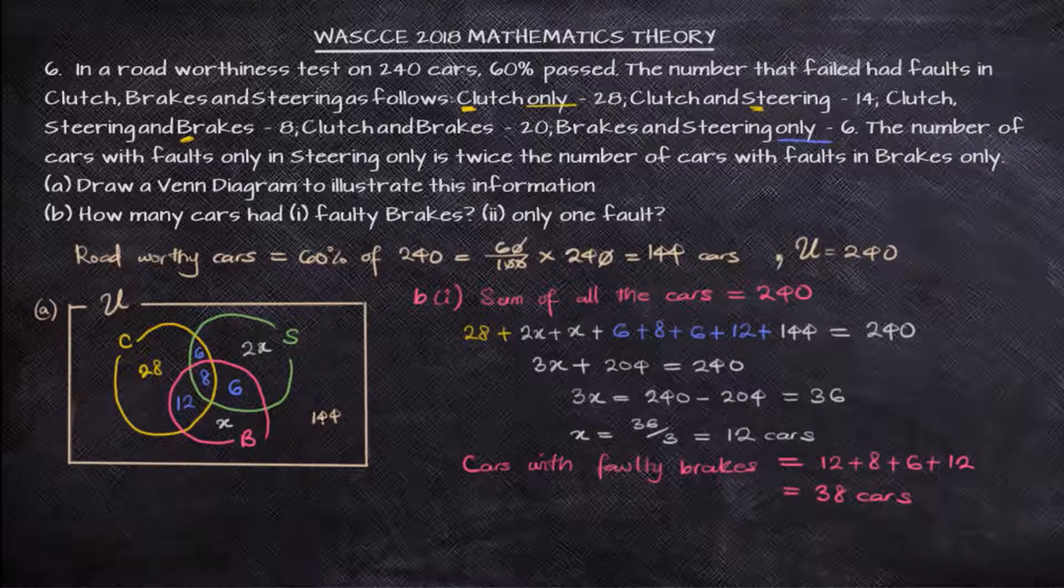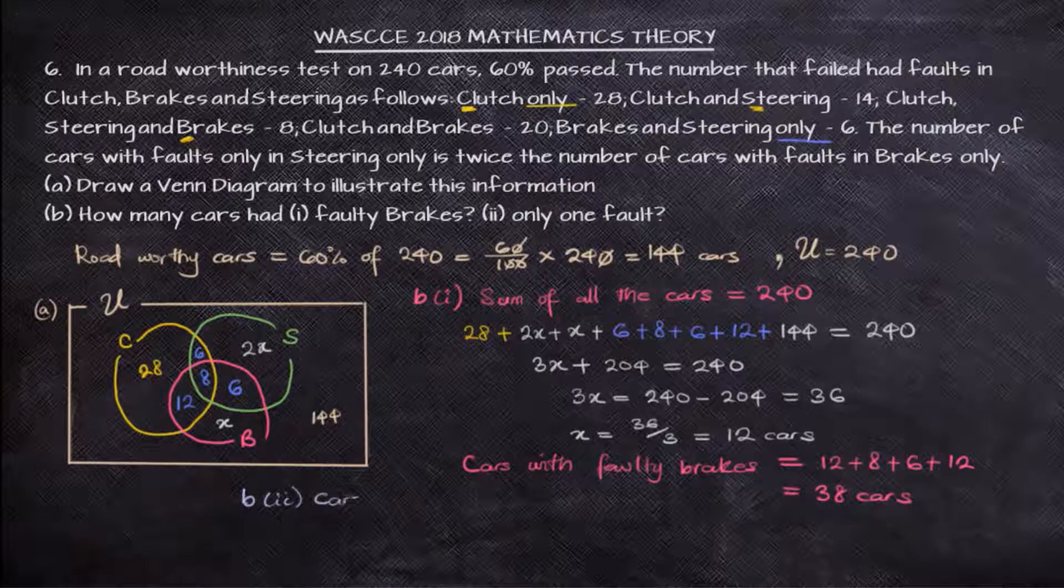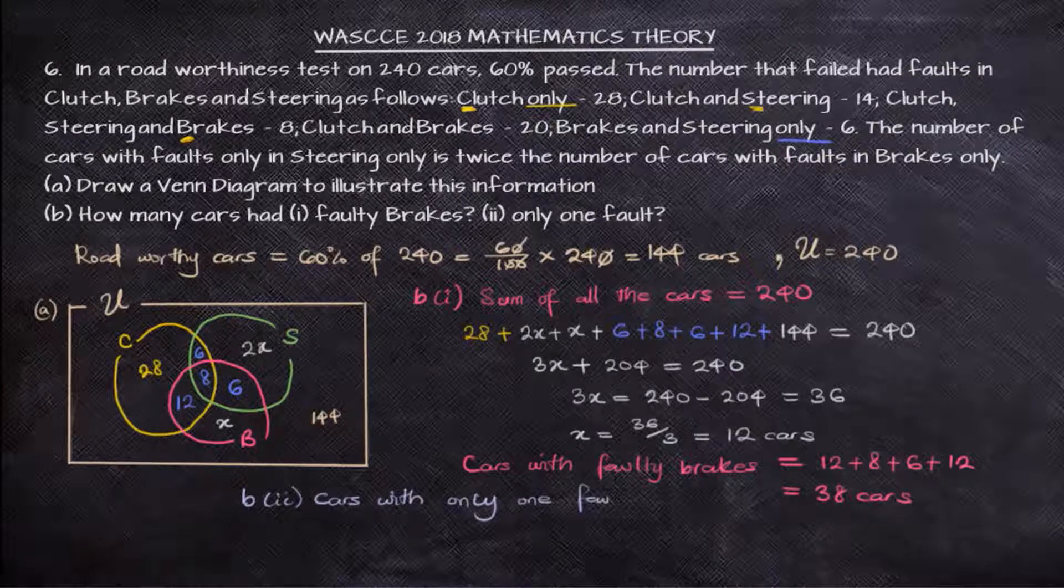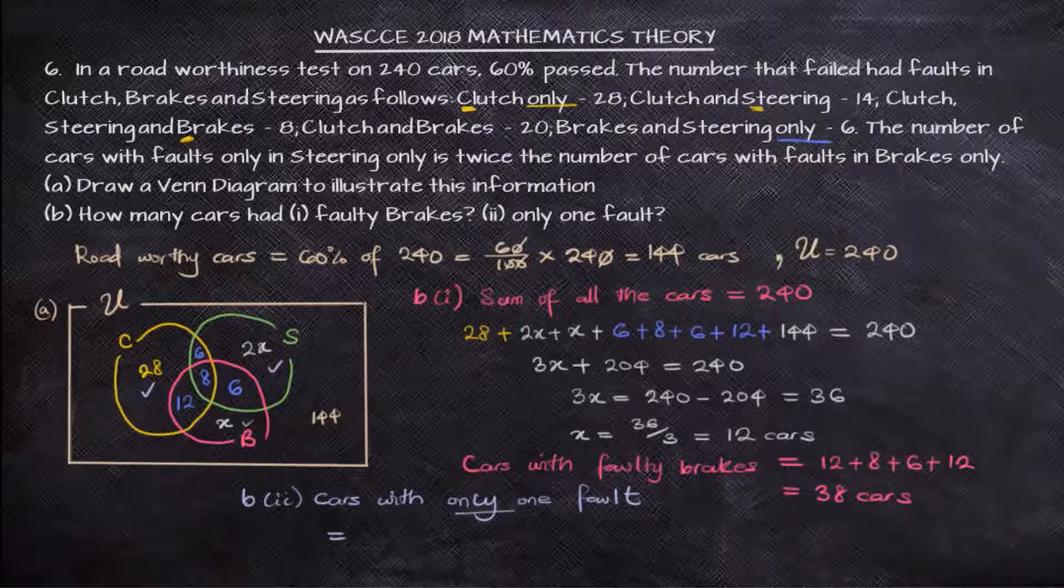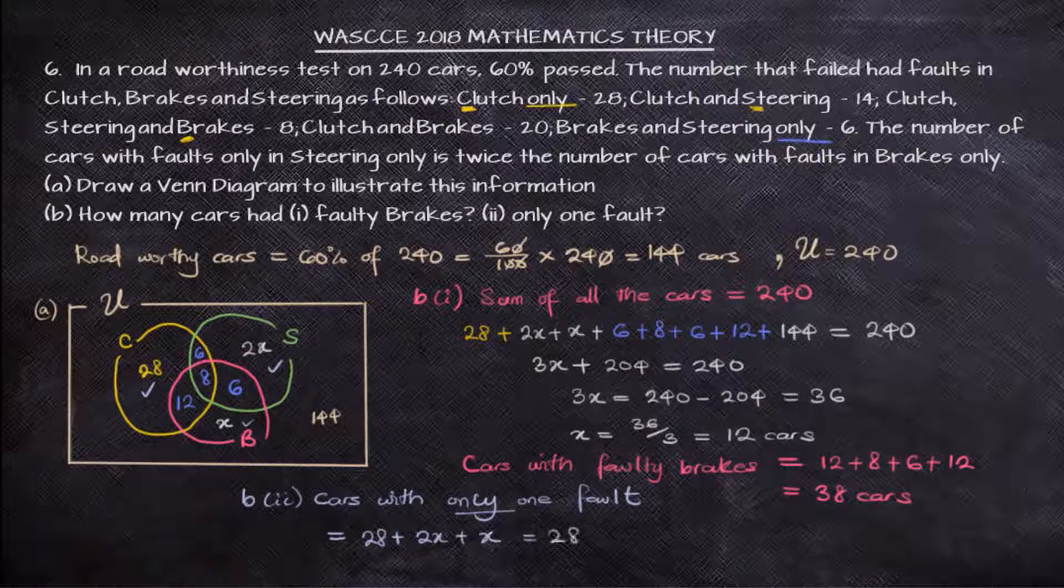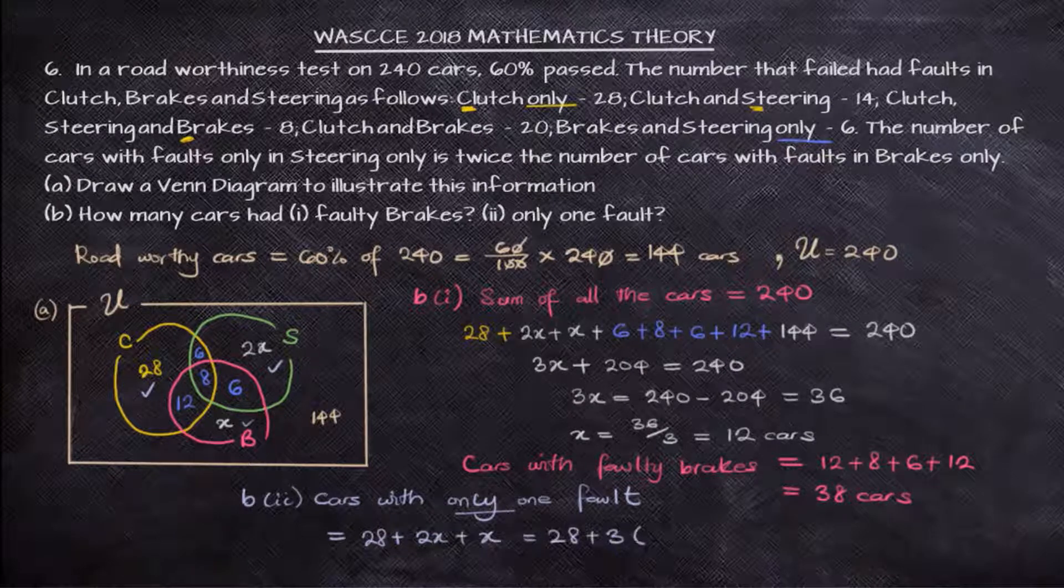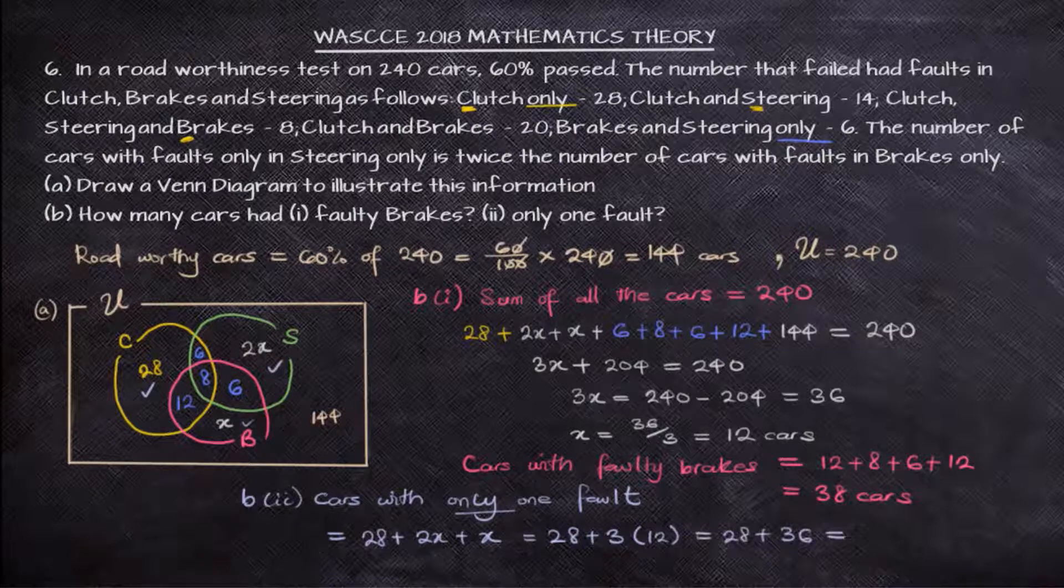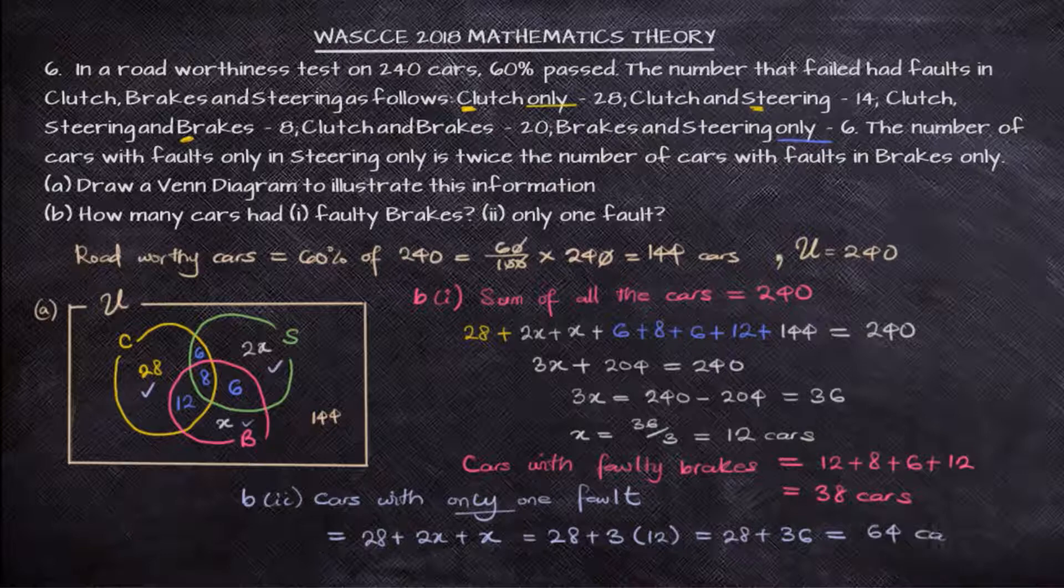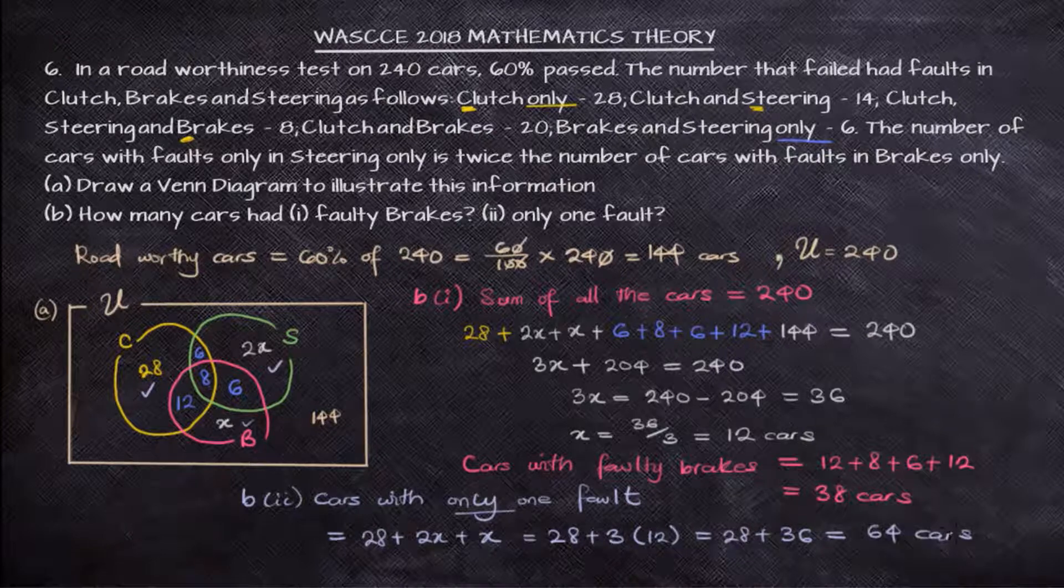So now to find the number of cars with only one fault. The cars with only one fault will mean that in the Venn diagram, the cars that are not interfacing with any other, is not intersecting with any other circle. So we have 28, 2x and x. So the cars with only one fault will be 28 plus 2x plus x, which will be 28 plus 3x. And since our x has been found to be 12, that will be 28 plus 36. And that is equal to 64 cars. And that is the solution to our problem.